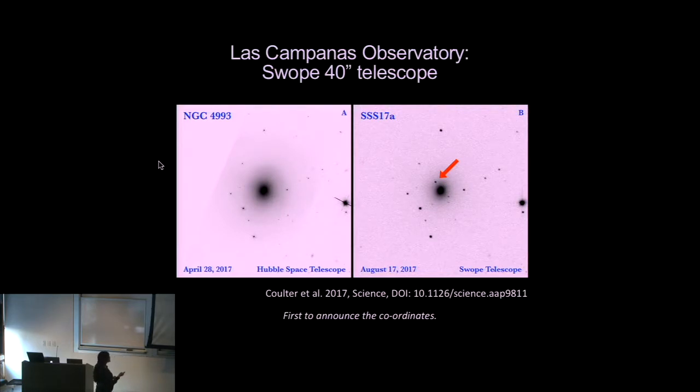NGC-4993. And you can see there's nothing here. The reference image, I'm sorry, this is actually a reference image from before, and there's a bright source here on August 17, 2017, 10 and a half hours after the merger.